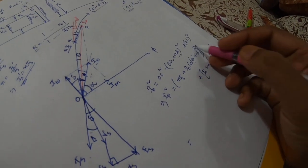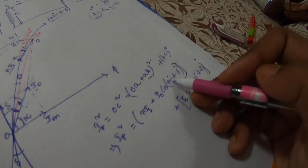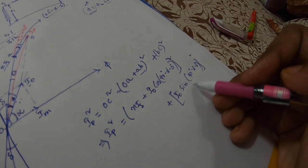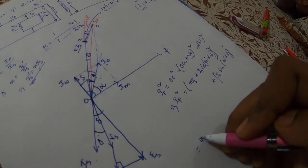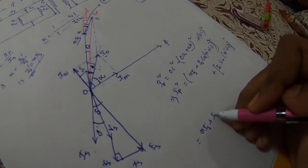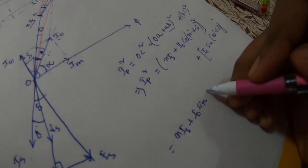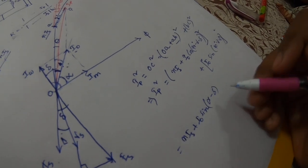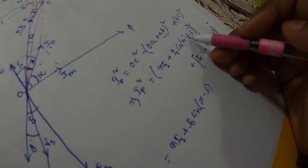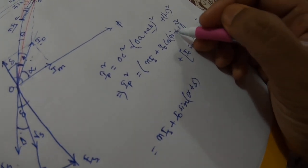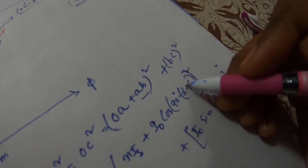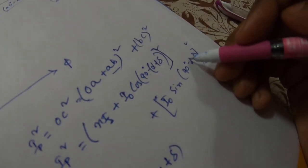Next, cos(90° − α − δ) becomes sin(α + δ) and sin(90° − α − δ) becomes cos(α + δ). So we can write Ip approximately as nIs plus I0 sin(α + δ), with the BC term being I0 cos(α + δ) — using the approximation for small angles in the squared terms.